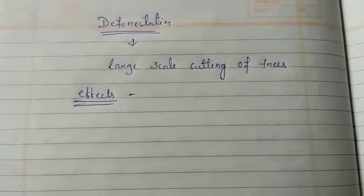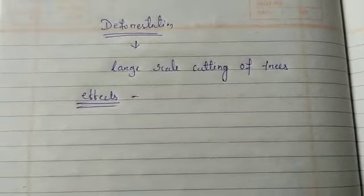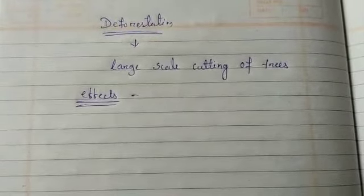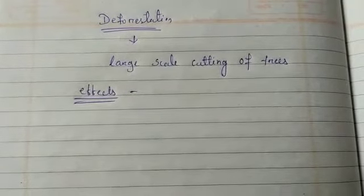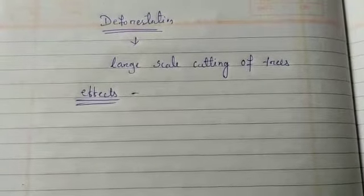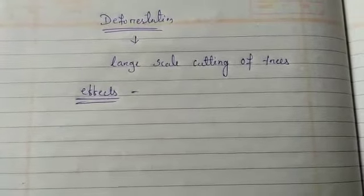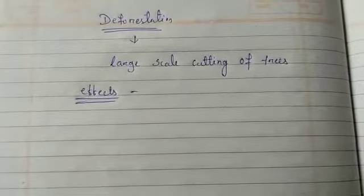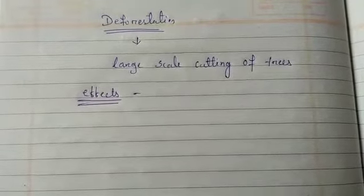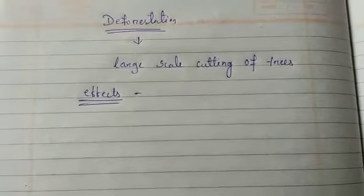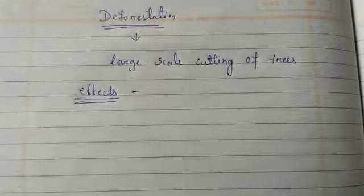Deforestation leads to soil erosion, it disturbs the natural process of recharging of ground water, and it leads to loss of habitat for many animals. We will discuss them in detail.